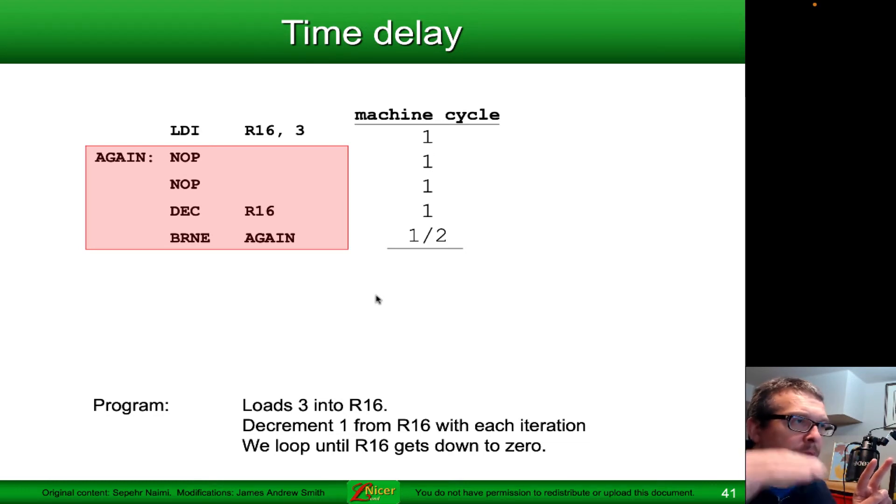We go to the top of the loop again. We're going to do nop, one, nop, one, decrement again. Now R16 is going to be zero. We do the branch. This is the third iteration through the loop. We do the branch, if not equal. We test to see if R16 has resulted in a contents of zero. That is true in this particular case. So in this case, there's no branch penalty. We take one cycle and we move through.